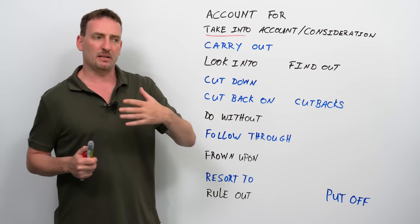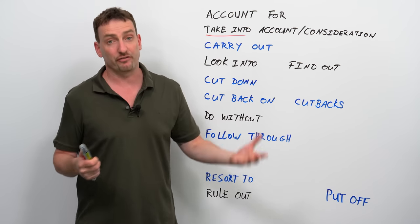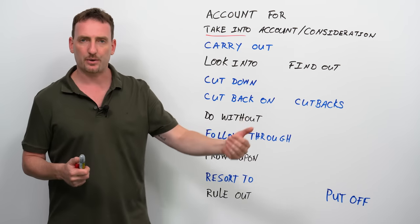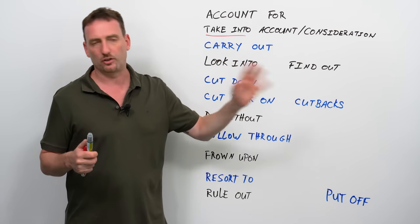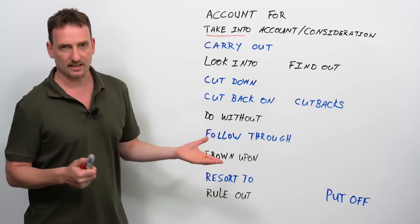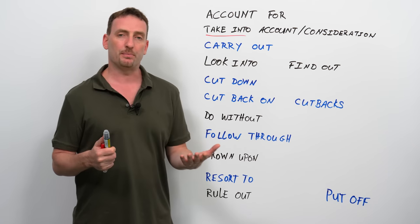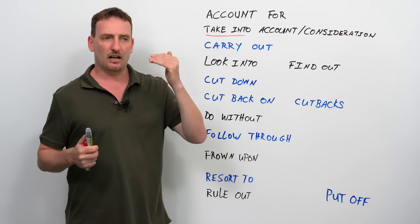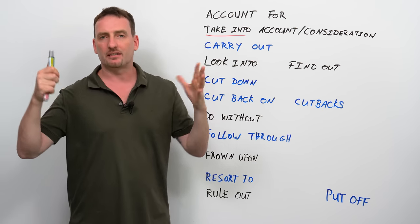Do without. So, do without basically means be able to succeed or survive without something. So, if you can do without it, it means you'll be okay if you don't have it.